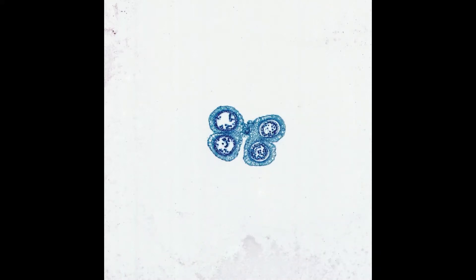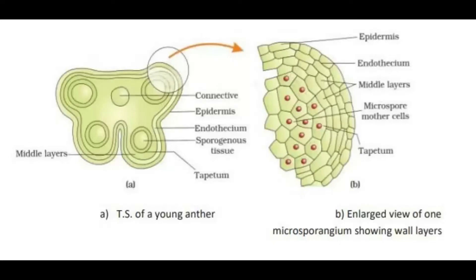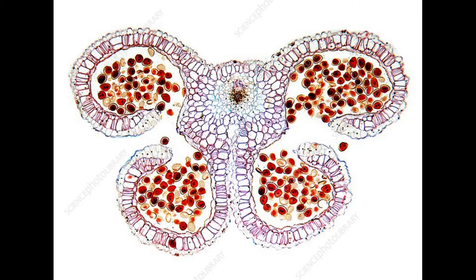Diagram: one score. Labeling: one score. That's the score. So if we look at it from the examination point of view, we will see microsporogenesis. This process is called a very important idea.